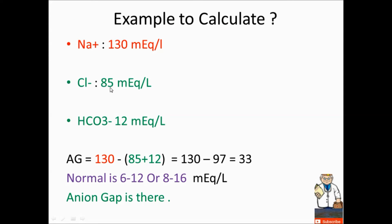Using the same formula: 130, 85, and 12. Add the anions first: 85 plus 12, then subtract from sodium 130. Cations minus anions gives 33. The normal is 6 to 12, so with 33, the anion gap is elevated — anion gap is present.